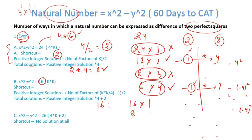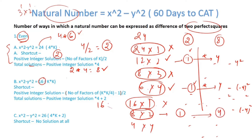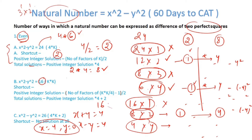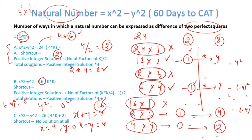16 can be expressed as 16×1, 8×2, and 4×4. For 16×1 (even×odd) there is no solution. For 8×2 (even×even): one positive integer solution and 4 total integer solutions. For 4×4: x+y = 4 and x-y = 4, which gives x = 4 and y = 0. But 0 is not a positive integer, so this gives 0 positive integer solutions. However, 16 can be written as 4² minus 0² and also as (-4)² minus 0², giving 2 integer solutions from this case.